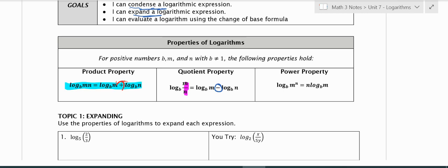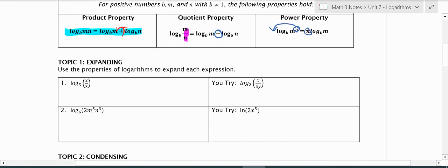The last one is the power property. If I'm taking log base b of m to the n, I could rewrite this by moving the exponent to the front and it becomes like a coefficient. This sometimes makes it nice if I want to solve a problem - makes it a little easier to work with.